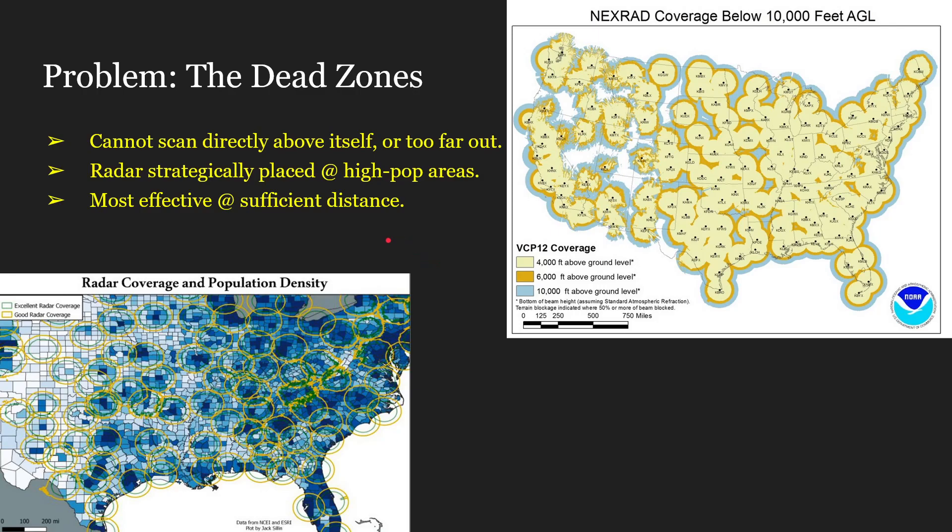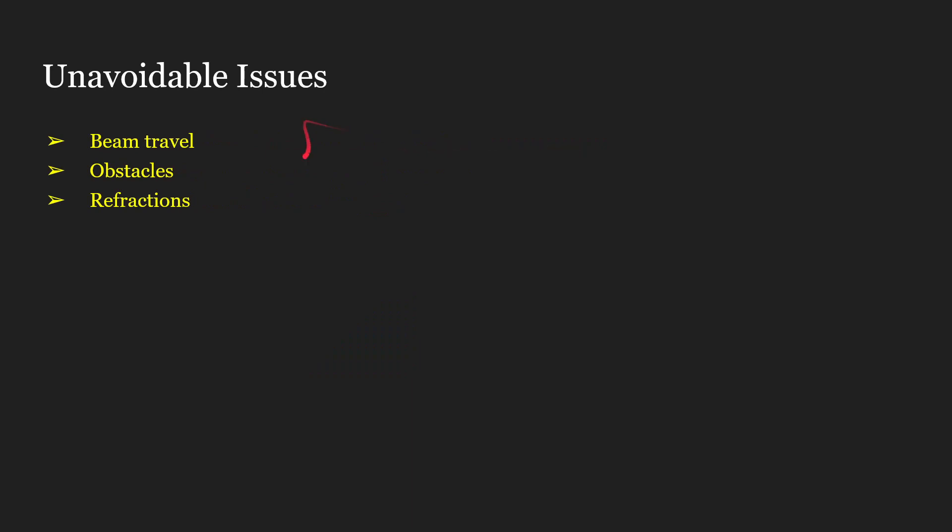Doppler radar is most effective at a sufficient distance. However, this distance cannot be too close to the radar. Like I just mentioned, Doppler cannot scan directly above itself or too far out. Stuff like the Rockies are going to inhibit the Doppler radar beam coverage as well, which is why we are seeing dead zones pretty commonly around Idaho, Montana, Wyoming, Utah, and Nevada.